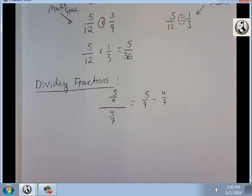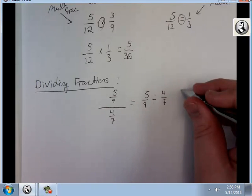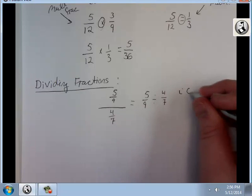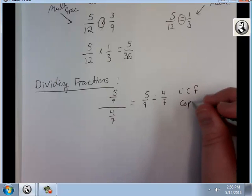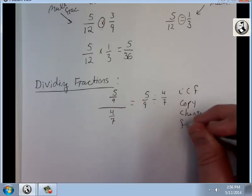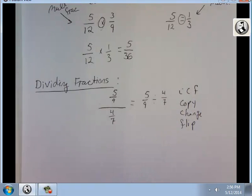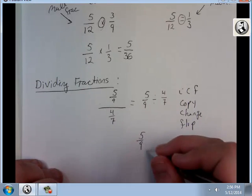So how am I going to do this? The way I was taught in middle school is called CCF, which stands for copy, change, flip. Here's what I do. I copy my first fraction just like it is, 5 over 9. I change my sign to multiplication. Now I flip my second.